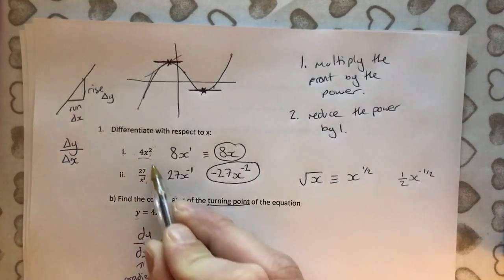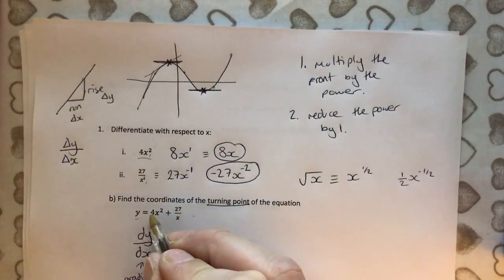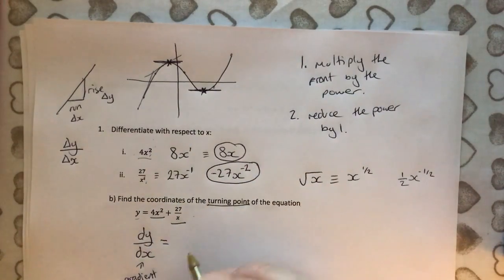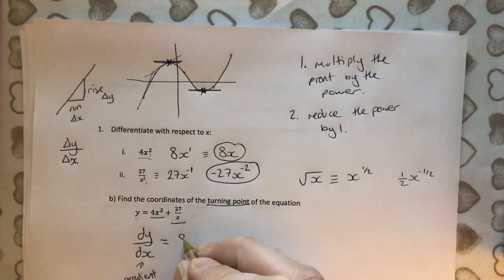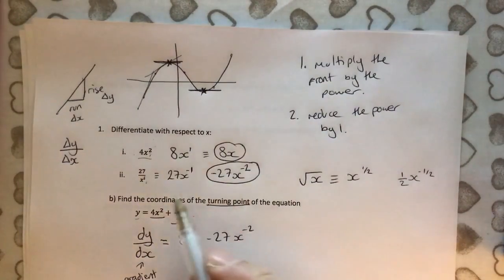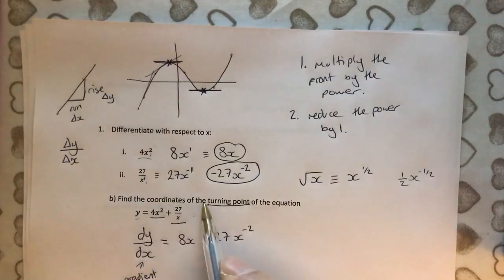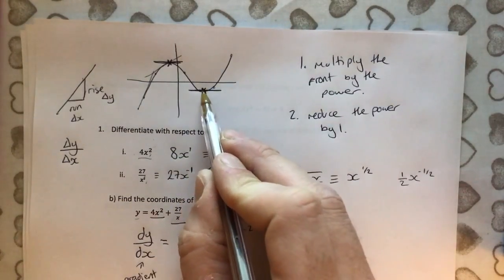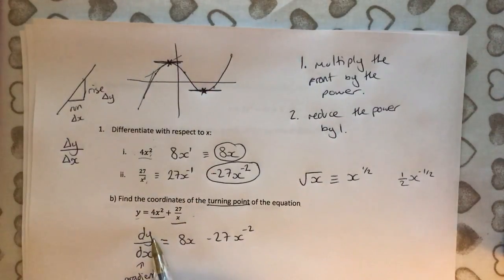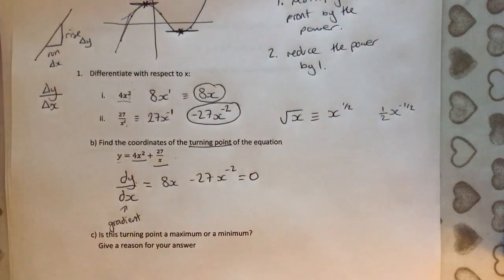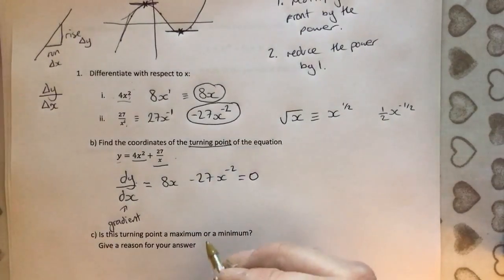And if we differentiate this like we just have, we would just do each bit separately. Well, we've already done those. We've done them. We've got them here. So dy by dx equals 8x minus 27x to the minus 2. And we've also been told to find the coordinates of the turning point of the equation. Well, the turning point, we know that that gradient is 0. So if that's the gradient and it equals this and that gradient equals 0, we can now just rearrange this for 0. To solve it when it equals 0. Rearrange it for x.